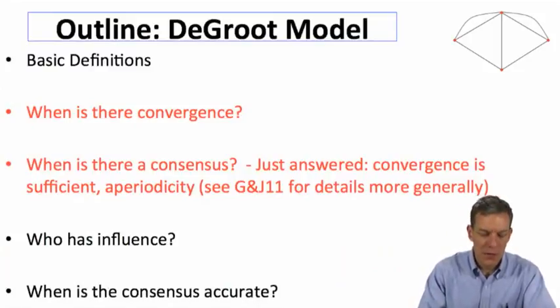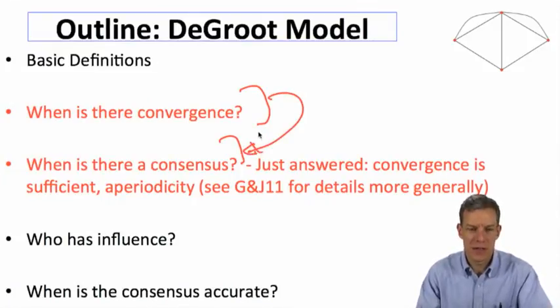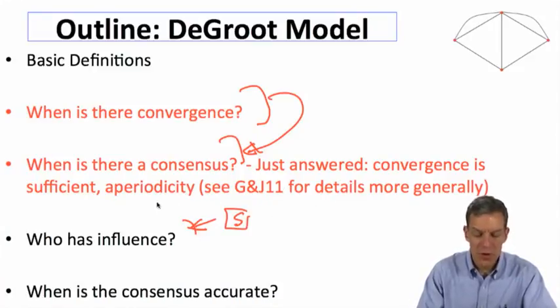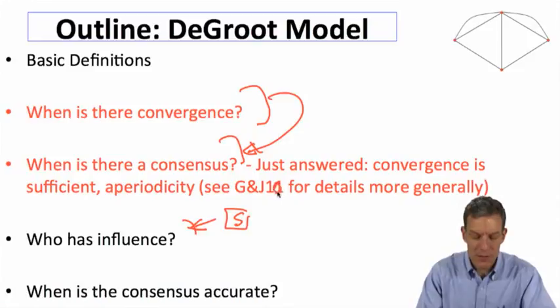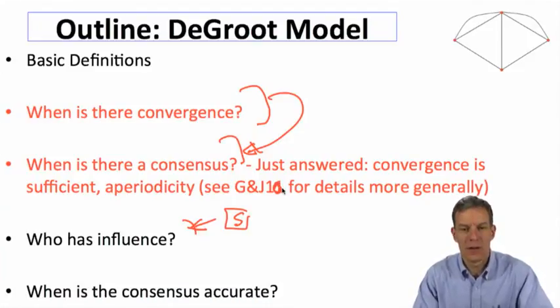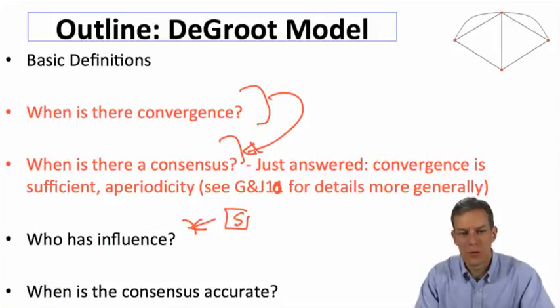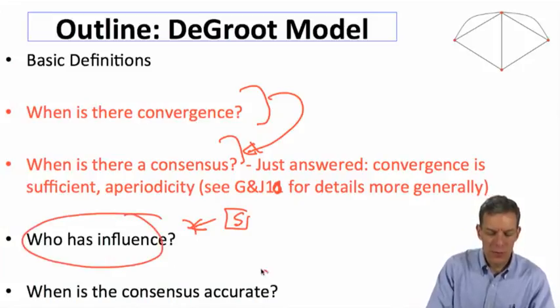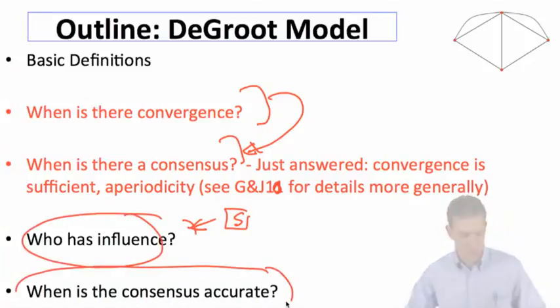Okay, so what do we find? We've got, you know, when is there a convergence, and giving convergence actually gives us a consensus. Everybody converges to the same thing. That also told us a little bit about the influence, because we're getting this S vector out. So it's previewing a lot of what's going to happen in influence. If you want to figure out the full details of this, there's actually a paper by myself and Ben Golub in 2010, which gives more general details on this kind of convergence in this model. But we can ask now, then, you know, who has influence? What can we say about influence? When is the consensus accurate? These kinds of things as well.